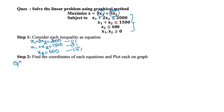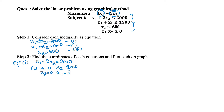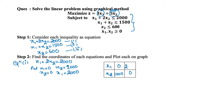For equation 1, x1 plus 2x2 equals 2000. Put x1 equals 0, you get x2 equals 1000. Similarly, when you put x2 equals 0, you get x1 equals 2000. So the coordinates for equation 1 are: when x1 is 0, x2 is 1000; and when x2 is 0, x1 is 2000.